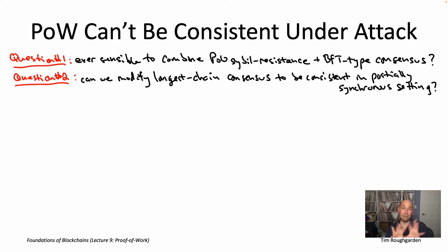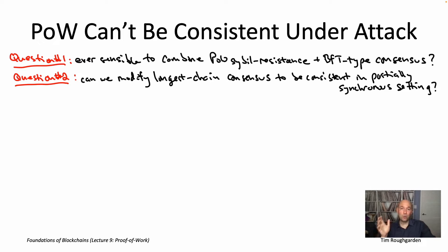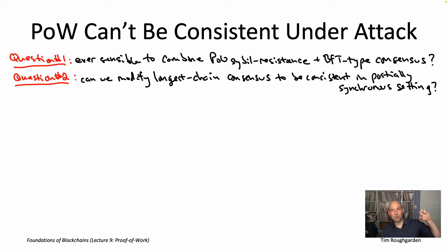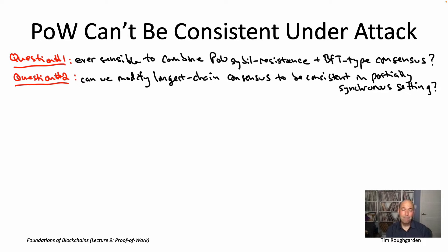The intuition for this was quite simple. Just think about a network partition — separate the nodes into group A and group B, and assume the network delays messages between A and B for some unknown period of time. Messages within A arrive promptly, same with messages within B, but anything across the groups is delayed. If you're running longest chain consensus during such a partition, nodes in A will grow their own longest chain and nodes in B will grow their own, and if that goes on long enough, those chains will exceed the security parameter K in length. At that point, the nodes in A and B will have different opinions about which blocks have been finalized — a violation of consistency.